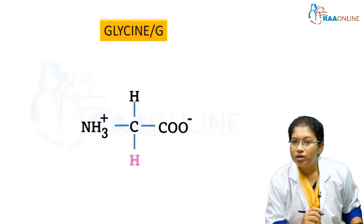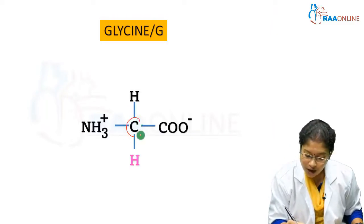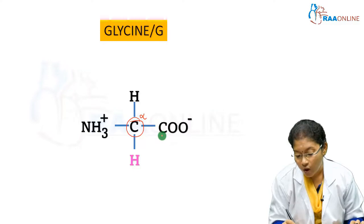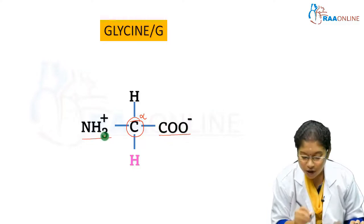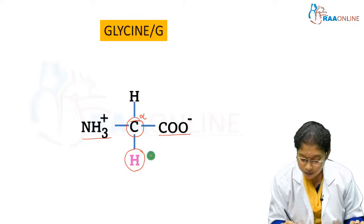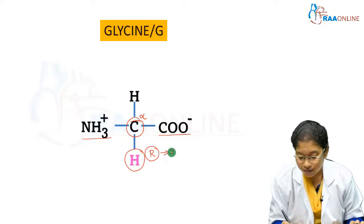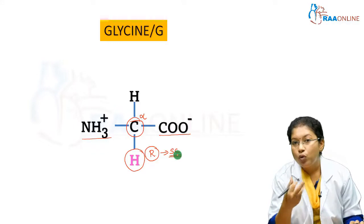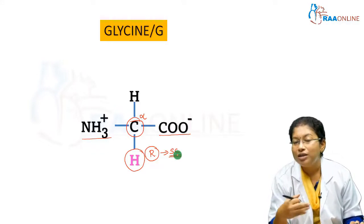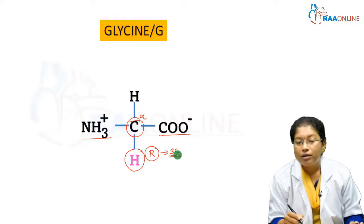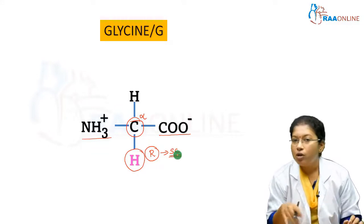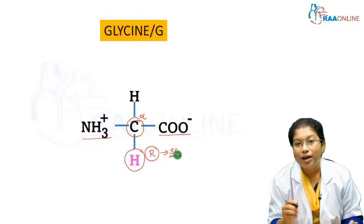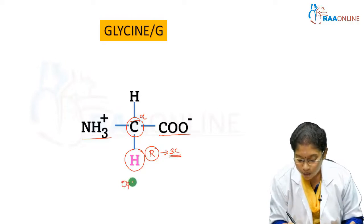Glycine's structure has a central alpha carbon with two functional groups: a COOH group and an amino group. The R group is a side chain containing a hydrogen atom, so there are two hydrogen atoms on either side. This makes it the simplest amino acid. However, this carbon is not a chiral carbon because all four groups attached are not different — so glycine is optically inactive.